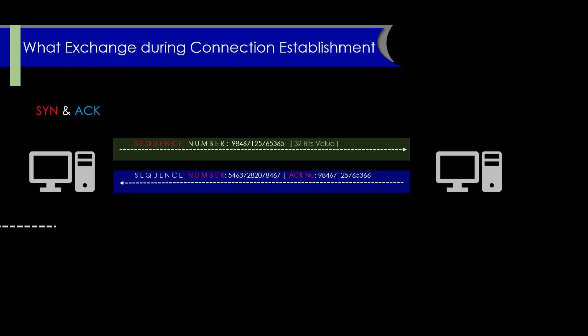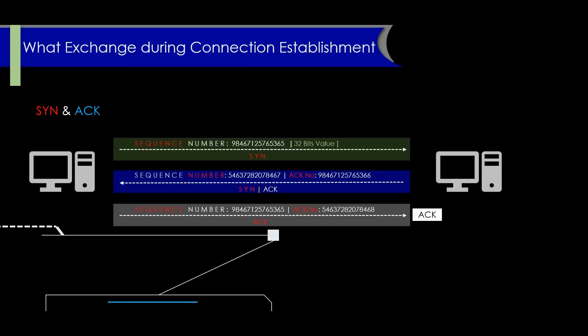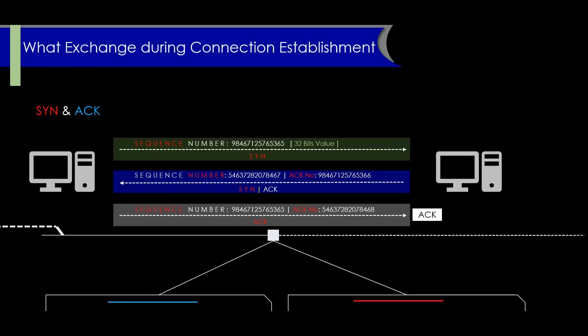Next, we'll discuss SYN and ACK. TCP uses a number of control flags to manage communication between endpoints. During connection establishment, SYN (synchronize) and ACK (acknowledgement) flags are used to establish and confirm the connection. The SYN flag is set by the initiating endpoint to request a connection and to synchronize the sequence number for that direction of flow. The ACK flag is set by the responding endpoint to confirm the connection has been established.